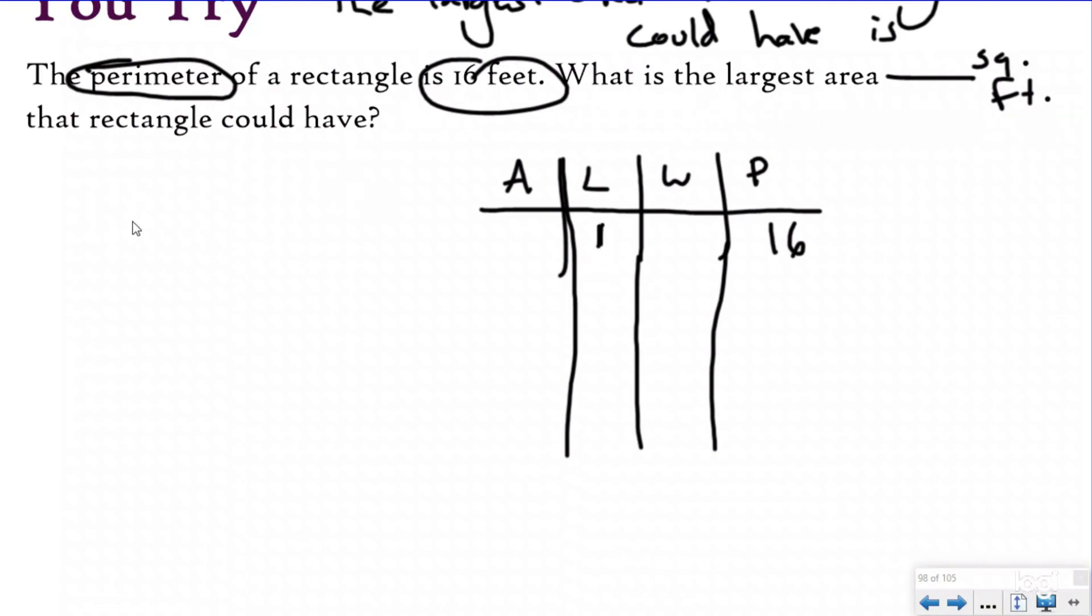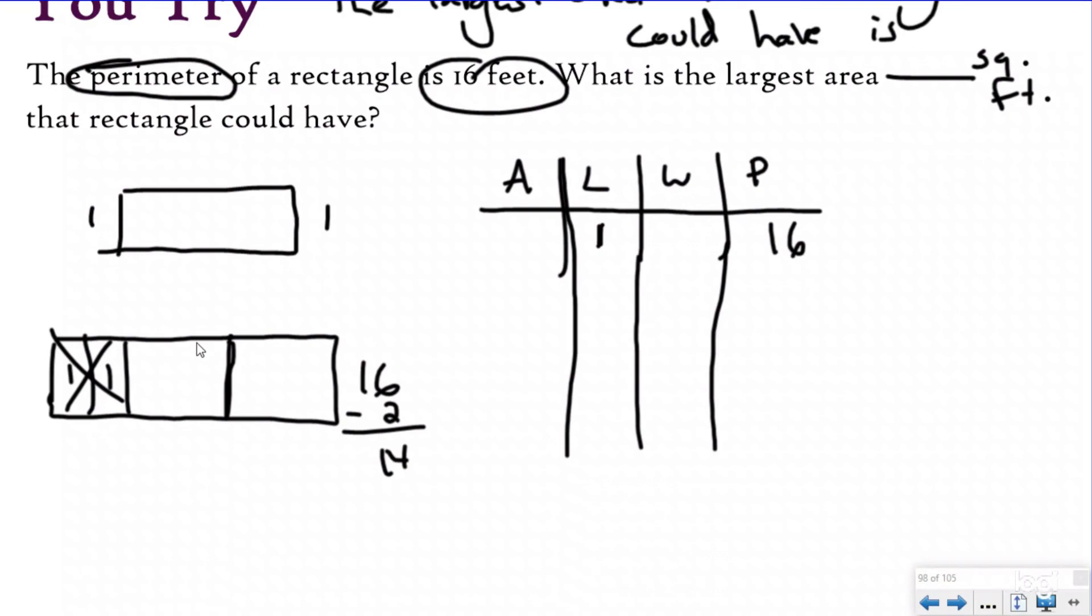I know my perimeter is going to be 16 feet and I'm looking for the largest area possible. So if I have 16 feet and I just start with one right here - if I have one, that means this side is going to be one. I'm going to draw my part-whole model to help me do my addition equation. If I have two parts of one and I know the total is 16, my other two groups have to be equal because they're congruent sides. If I take away the two, that leaves me with 14. 14 divided by two is going to be seven. So if my length is one, my width is seven, which gives me an area of seven square feet.